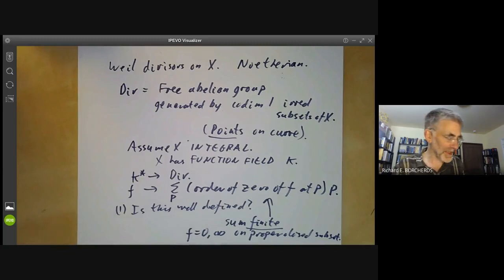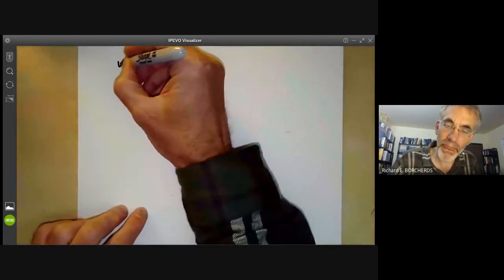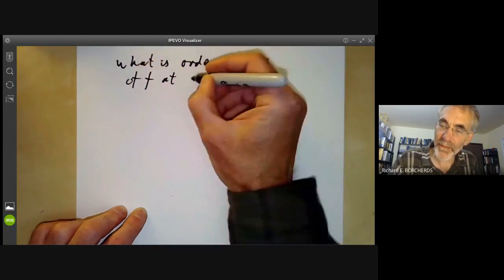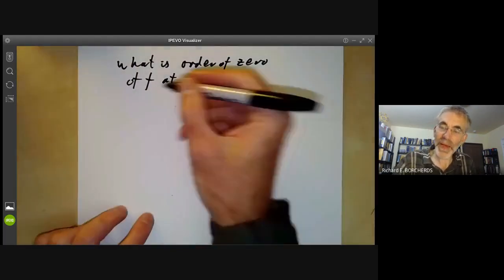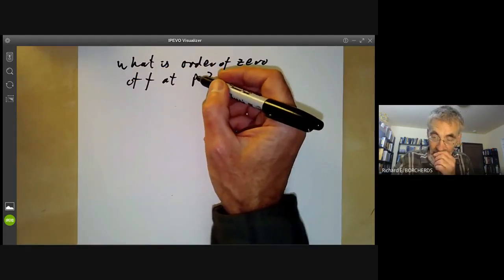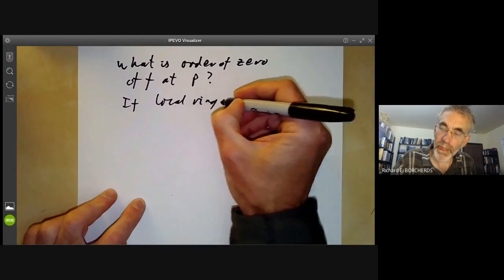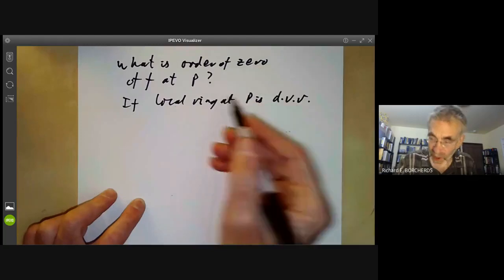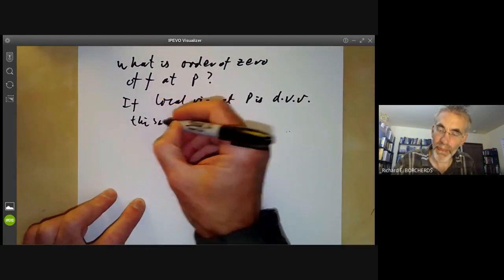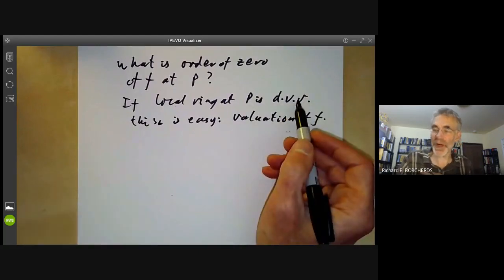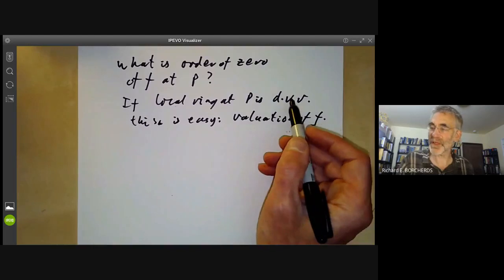A slightly more subtle point is what is the order of the zero of F at a point P? If the variety is non-singular at P, so if the local ring at P is a discrete valuation ring, which is what Hartshorne assumes, this is easy. We just take the valuation of F.